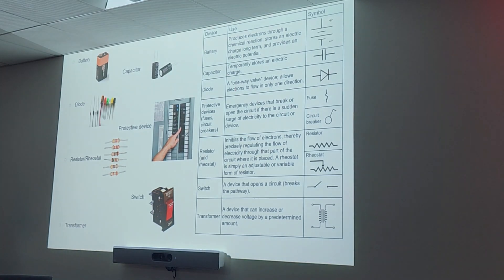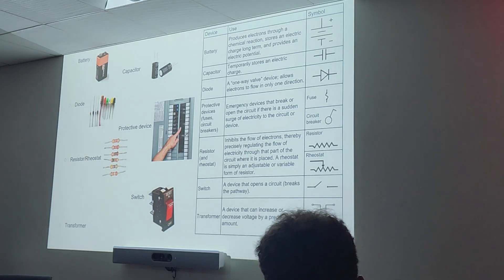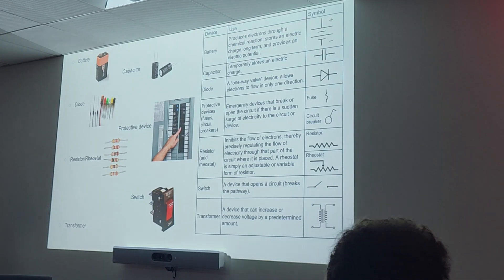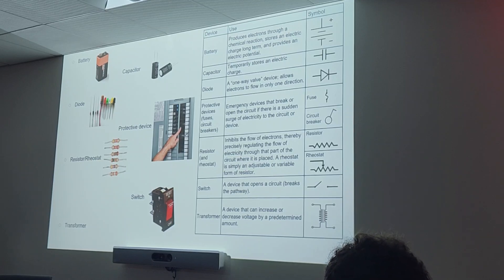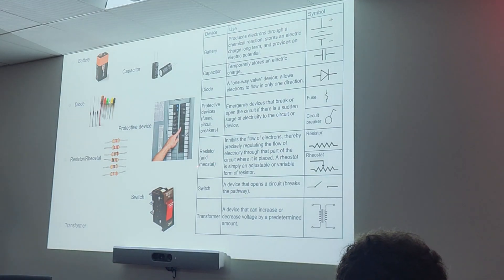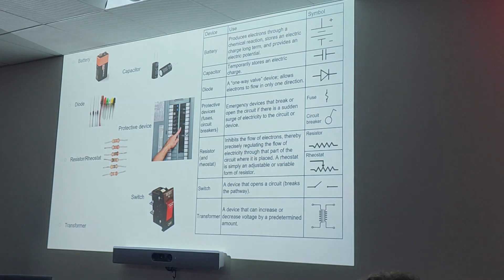The diode is kind of like a one-way valve device — it allows the flow of electrons only in one direction. If electrons try to come back, that valve is going to close. There are many different kinds of diodes. Within any circuit, we must have a protective device — for example, a circuit breaker. Have y'all noticed the big gray box in the x-ray rooms? Resistor: it stops the flow of electrons. And rheostat is basically a resistor that can be precisely controlled — it's an adjustable or variable form of resistor.